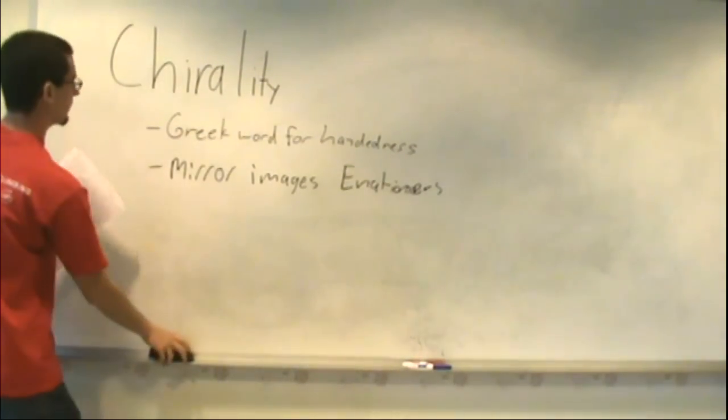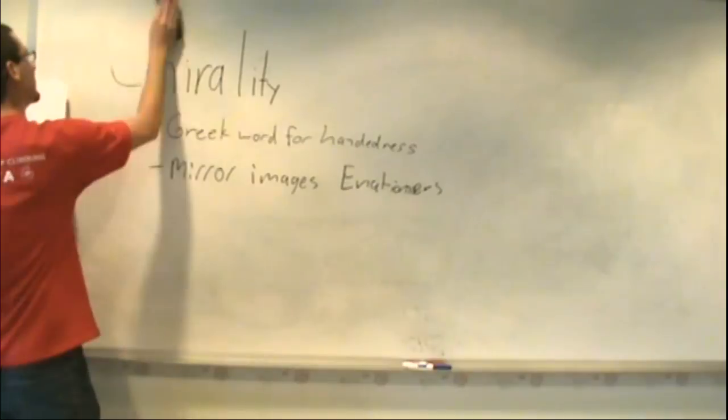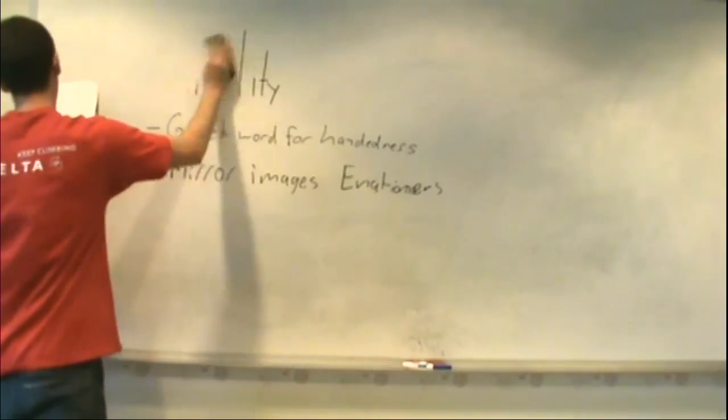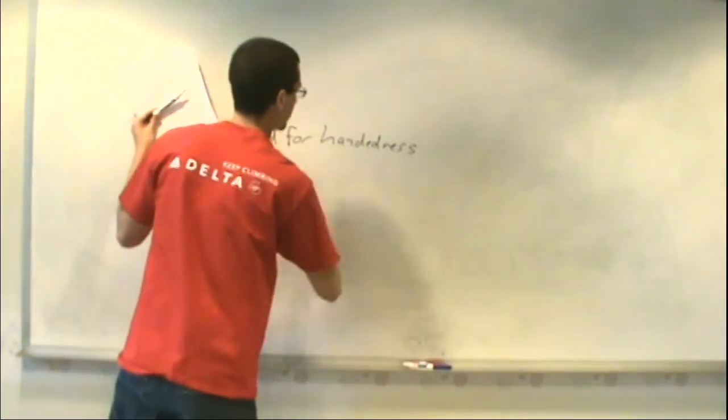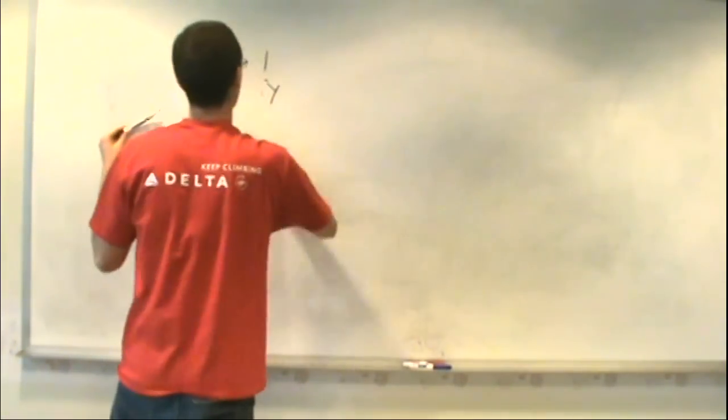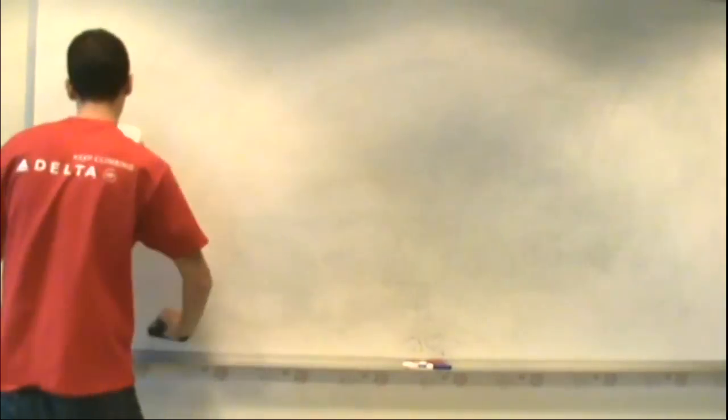And these mirror images are known as enantiomers. Enantiomers are non-superimposable mirror images of one another.